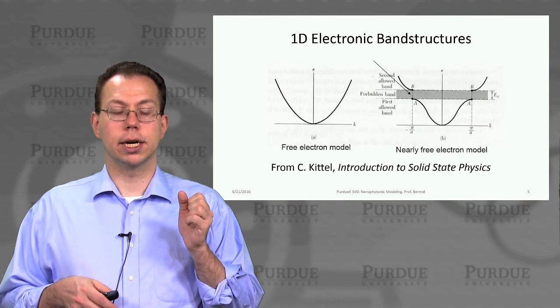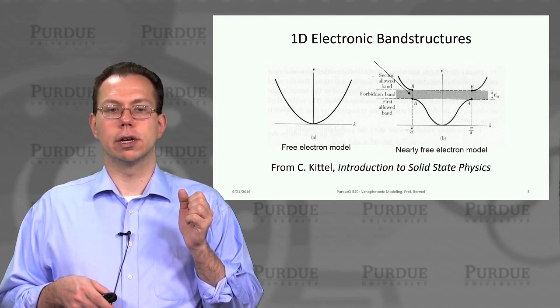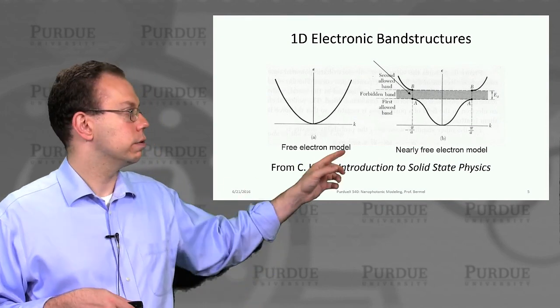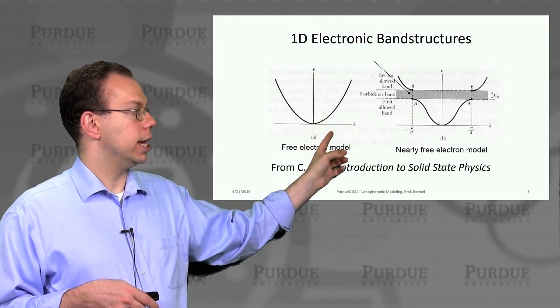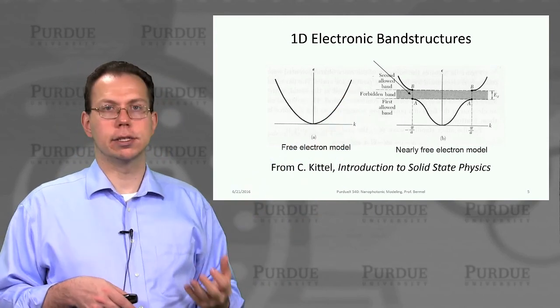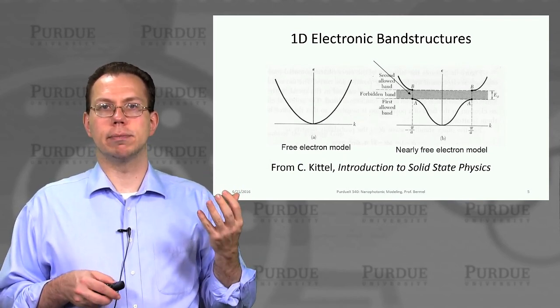When we look at the solutions we got from this approach, we know from before that the energy as a function of k would go quadratically with k. That was for the free particle. But once we've introduced the periodicity,